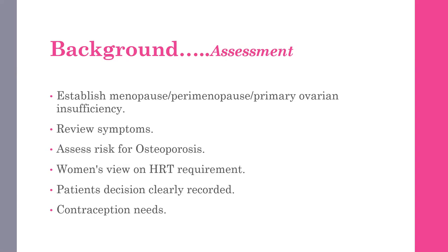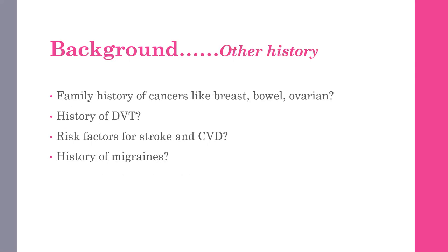Then consider what the woman thinks about HRT and what is her patient decision — clearly record and document that. Whether the patient needs contraception, because even at age 40-45 up to 50 there is a chance of pregnancy. Take the family history of cancers like breast, bowel, and ovarian cancers, any history of DVT, risk factors for stroke and cardiovascular disease, and any history of migraines — because when you start estrogen and progesterone treatment, side effects can relate to these factors.